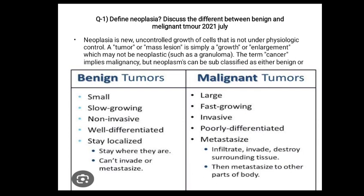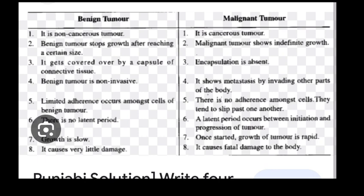Difference between benign tumor and malignant tumor: Benign tumor is a non-cancerous tumor. Malignant tumor is a cancerous tumor. Benign tumor stops growth after reaching a certain size, but malignant tumor shows indefinite growth. In benign tumor, it is covered by a capsule of connective tissue, but this is absent in malignancy. Benign tumor is non-invasive, but malignant tumor shows metastasis by invading other parts of the body.